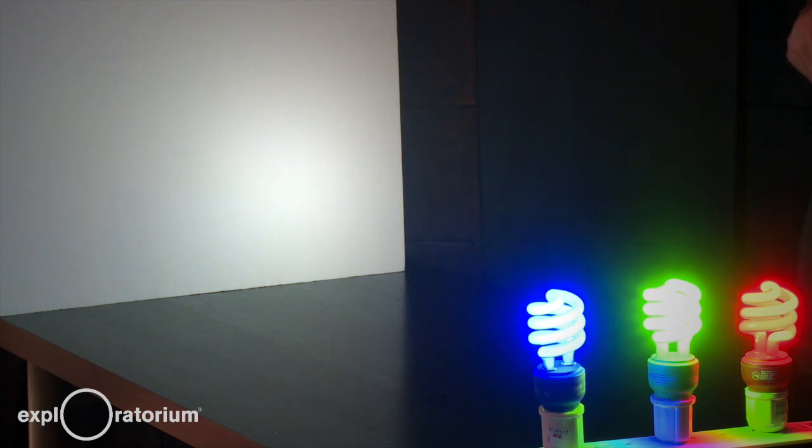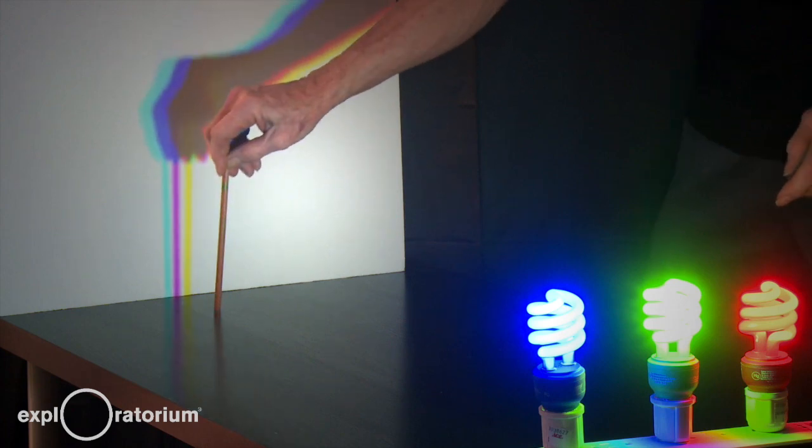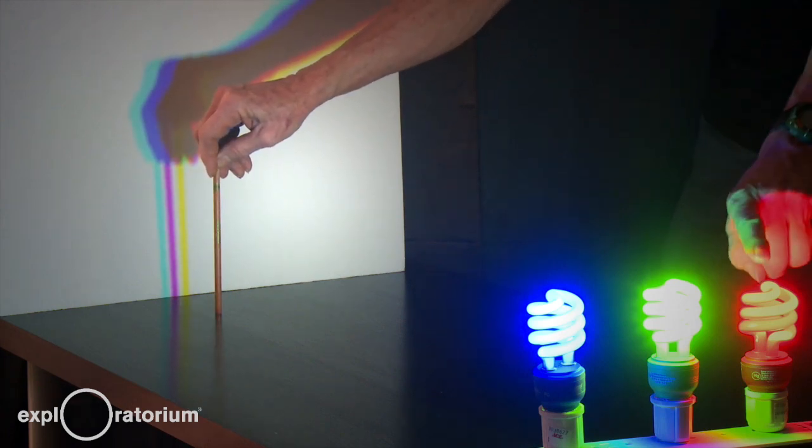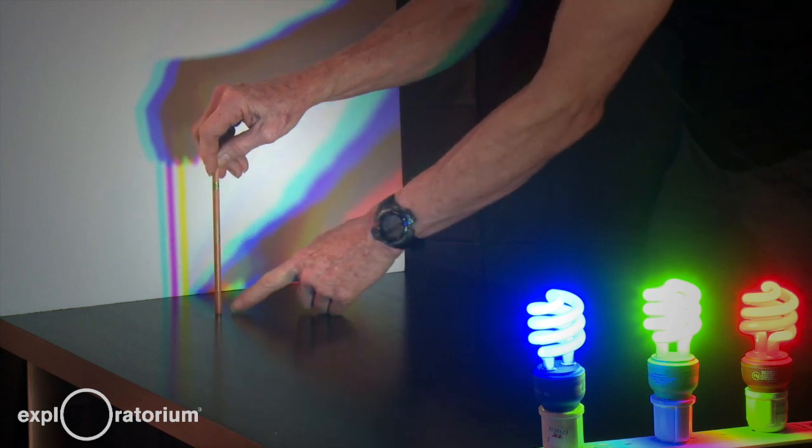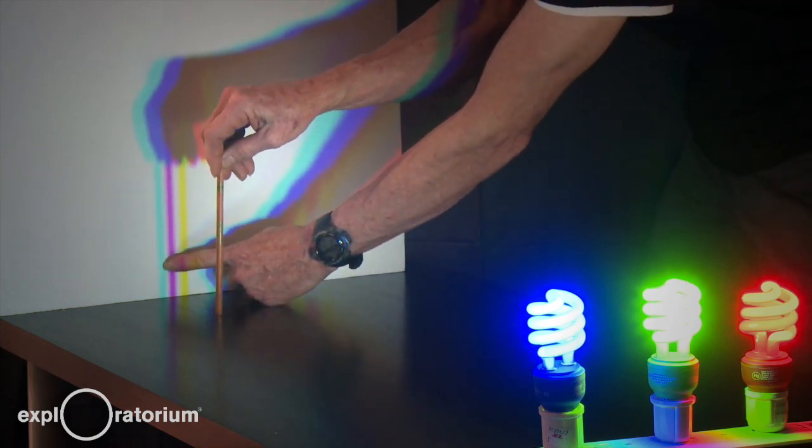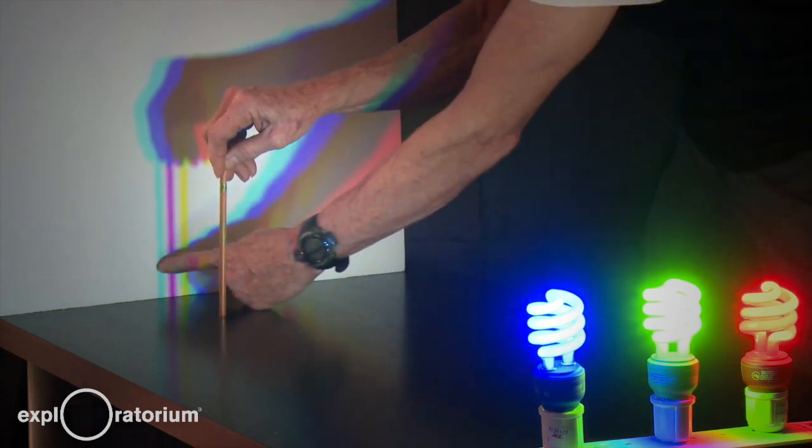To understand the yellow and cyan shadow, we have to remember that light travels in straight lines. So light from the red bulb travels in a straight line to the wall, but it's blocked by the pencil in this shadow over here. That's the straight line from the red to the board.